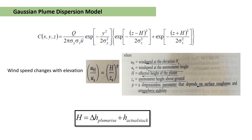There are some formulas related to the Gaussian plume dispersion model. The basic equation of the Gaussian plume model is shown here. There is also a relationship for how wind speed changes with elevation: U_h divided by U_a equals (h divided by z_a) to the power p, where p is a dimensionless parameter that depends on surface roughness and atmospheric stability. The effective stack height H = h + Δh, where Δh is the plume rise and h is the actual stack height.